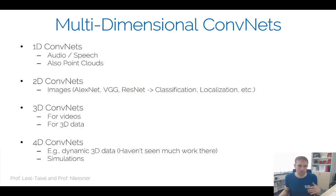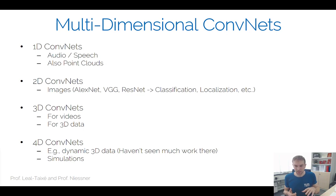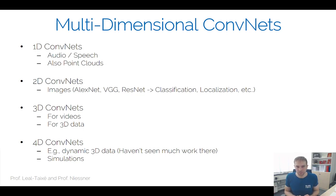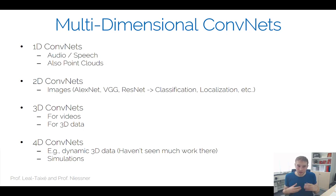In the 1D domain, we have audio and speech. We also have things like point clouds. When you're thinking about self-driving cars, they have LiDAR scanners which capture point clouds. These point clouds can be used to map the environment for semantic scene understanding. The reason why points are actually 1D is because every point has three dimensions and you stack them together into a linear vector, so you could in theory apply a 1D convolution on that.